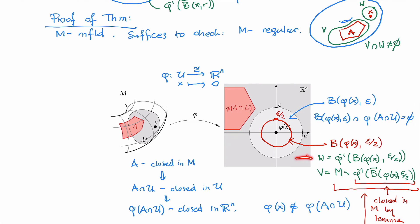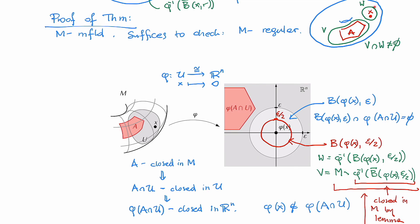Finally, notice that W consists of all points mapped by phi into the open ball of radius epsilon over 2, while V consists of all points not mapped into the closure of that ball. Therefore V and W are disjoint, exactly as required. Altogether, we have an open neighborhood W of X and an open neighborhood V of A that are disjoint. Since this construction works for any closed set and any point outside it, M is a regular space.